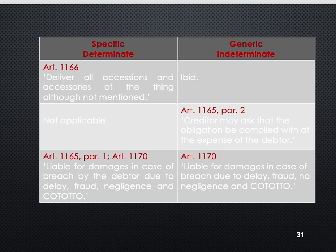We have different types of delivery. We have actual or traditional delivery, and constructive or implied delivery. Constructive delivery includes: tradicion simbolica, as when the keys of a bodega are given; tradicion longa manu, delivery by mere consent or pointing of an object; tradicion brevi manu, where a possessor of a thing not as an owner becomes the possessor as owner — for example, a tenant who buys the house he is renting; and tradicion constitutum possessorium, which is the opposite of brevi manu. There is also tradition by execution of legal forms and solemnities.